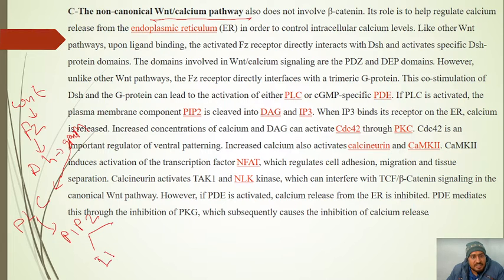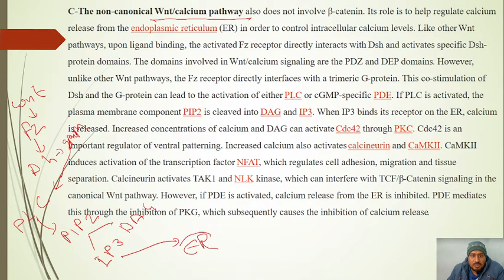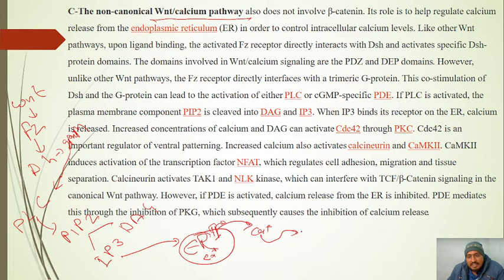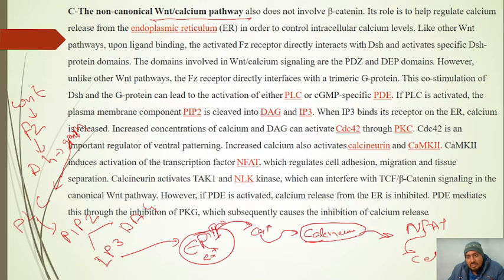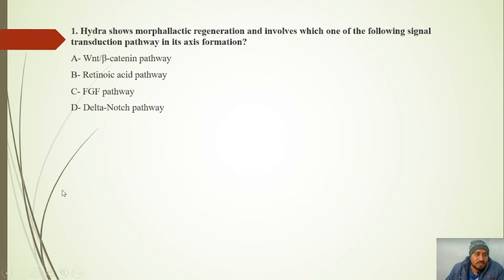For the non-canonical calcium pathway: IP3 diffuses through the cytosol to the endoplasmic reticulum. The IP3-gated channel on the ER activates and releases calcium. Calcium activates calcineurin, which dephosphorylates NFAT, allowing it to enter the nucleus and activate calcium-regulated genes. Beta-catenin has no role in the non-canonical calcium pathway.